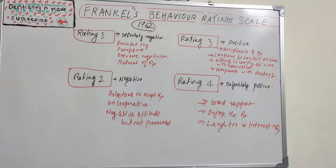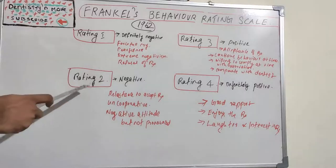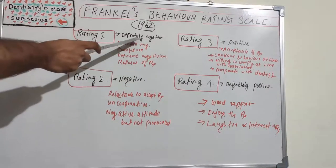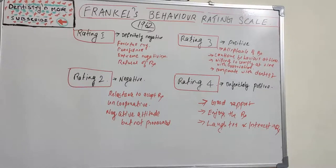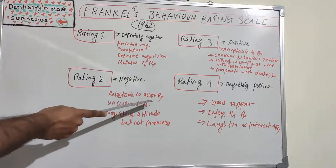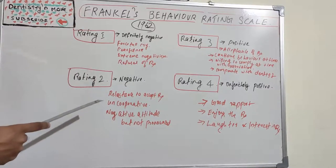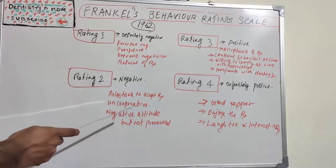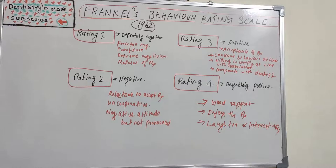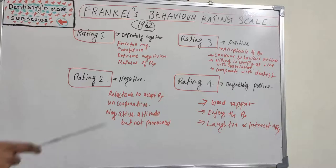Rating two is comparably better than 'Definitely Negative' but it is still a negative character, given as 'Negative.' These kids show reluctance to accept treatment and are uncooperative. There are some evidences of negative attitude, but it is not very much pronounced — still, the kid has a negative attitude and is reluctant to treatment.